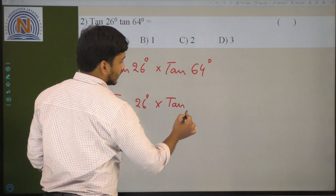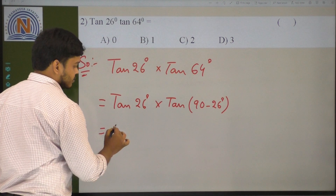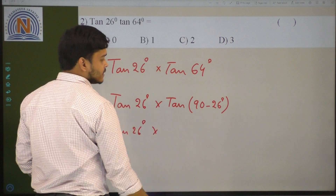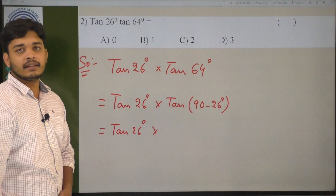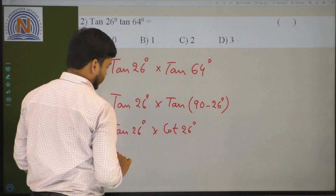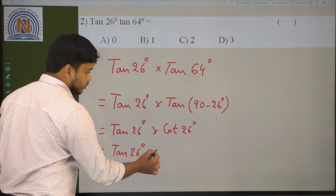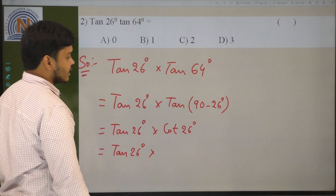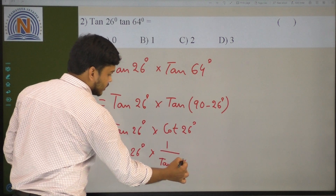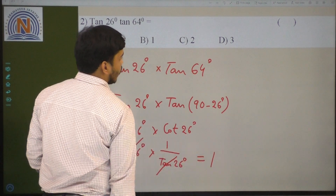Tan 64 degrees we can write as 90 minus 26 degrees. So tan 26 degrees into tan(90 minus 26°). Now tan(90 minus theta) is cot theta, so this becomes tan 26 degrees into cot 26 degrees, which equals tan 26 degrees into 1 by tan 26 degrees. Tan 26 and tan 26 get cancelled. The value is 1.